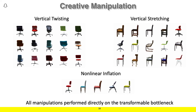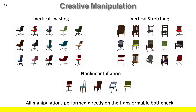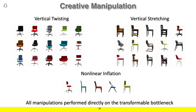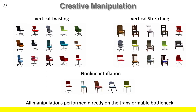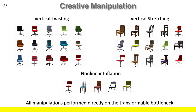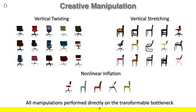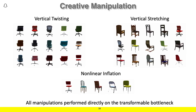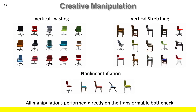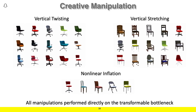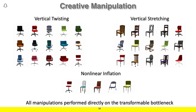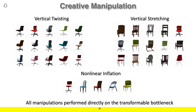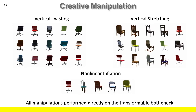Here you see several creative manipulation results for chairs. Given the swivel chairs seen on the left, we can rotate the top and bottom of the volume in different directions to produce the swiveling effect seen here. We can also apply stretching along the vertical axis, or non-linear inflation and deflation of the image content. Once these manipulations are performed on the encoded volumes, we can also synthesize novel views by simply applying a rigid transformation to the transformed volume.